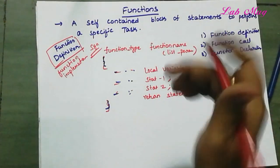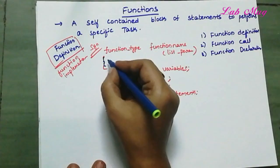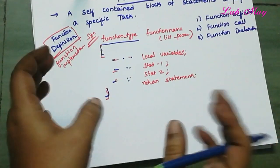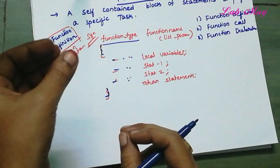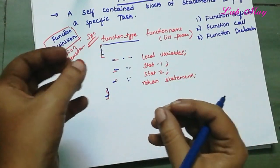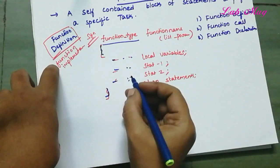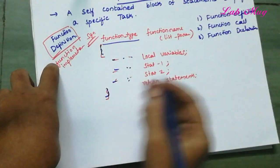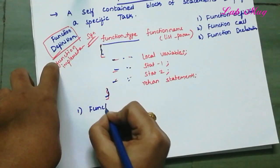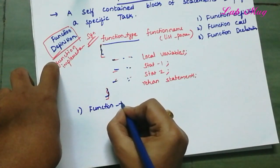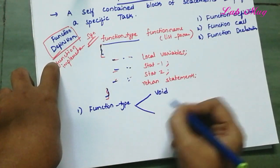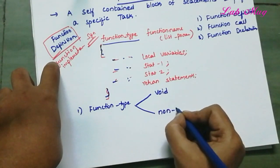The first word is function type. Function type means the return type of the function. Function type is classified into two types: first one, void functions, and second, non-void functions.